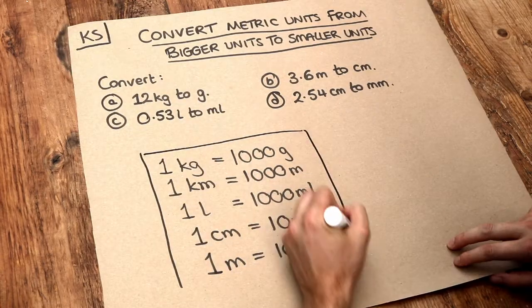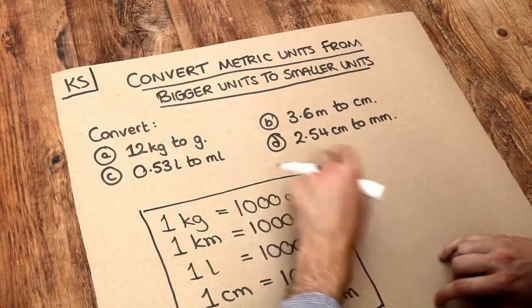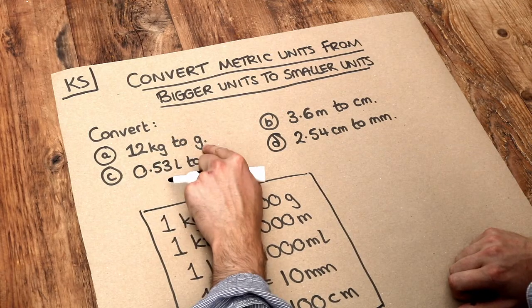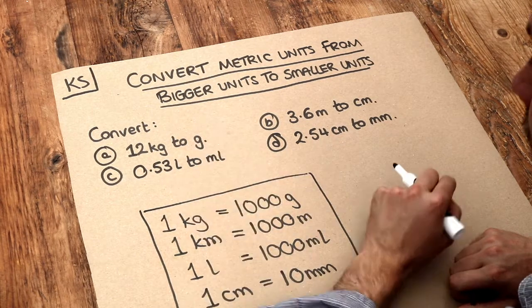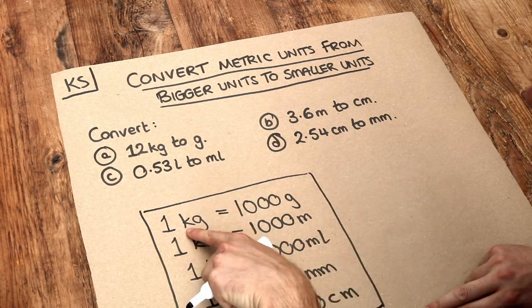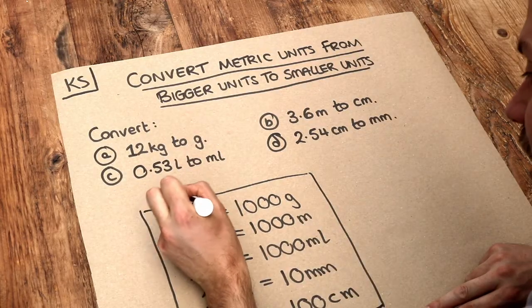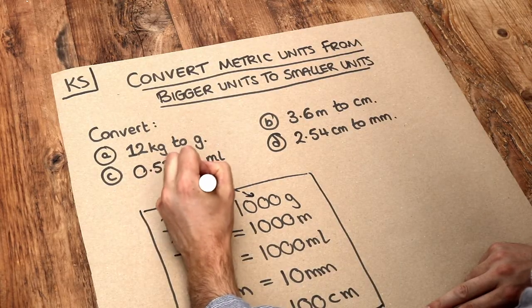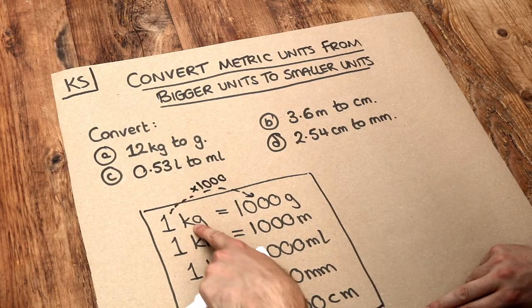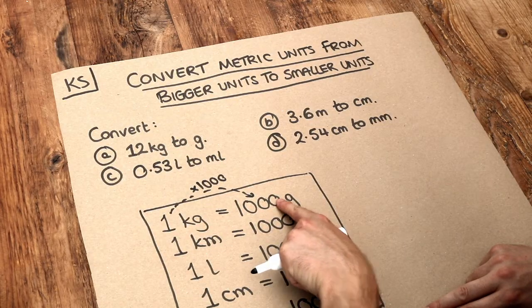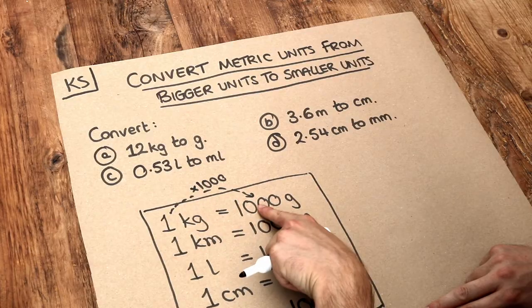Now for these questions here, we're going from a bigger unit, like kilograms, to a smaller unit, like grams. Now notice to go from kilograms to grams, can you see that number is getting a thousand times bigger? So going from kilograms to grams, we would have to times by a thousand because the number is getting bigger.